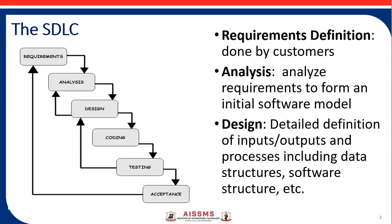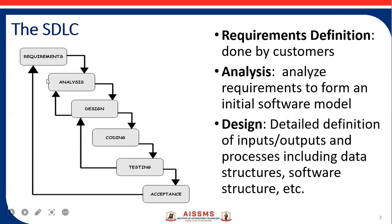Once the requirements are gathered, the second phase is analysis. In the analysis phase, the software development team analyzes the requirements to form an initial software model. Here we develop the SRS, that is the Software Requirements Specification. It is one of the software products required to design the software for the next phases. So in the analysis phase, we produce the SRS.